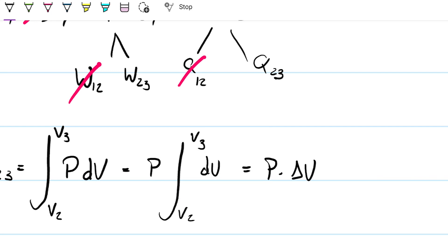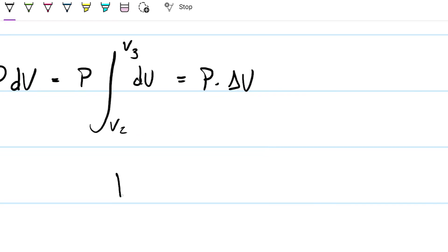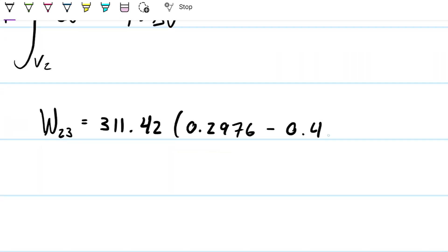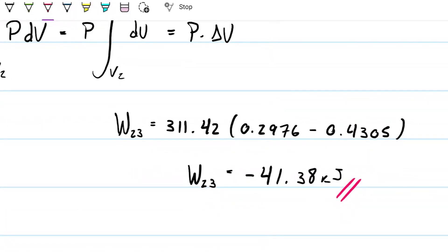We know all of these volumes, so this is straightforward. Work from 2 to 3 equals 311.42 multiplied by the difference in volume: 0.2976 minus 0.4305. We're multiplying kilopascals by meters cubed, which gives kilojoules. The work from 2 to 3 is 41.38 kilojoules. Since volume is decreasing from 2 to 3, energy cannot be going higher.